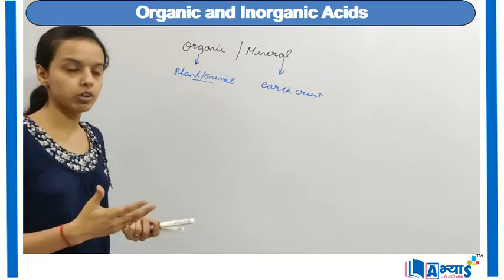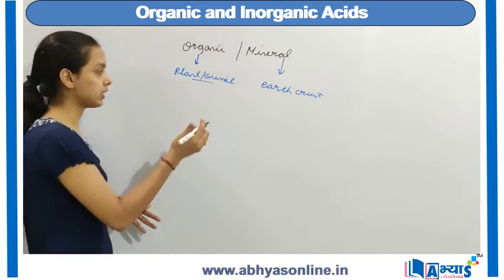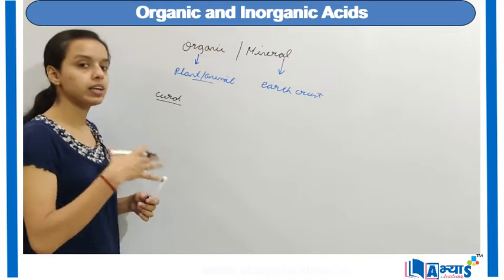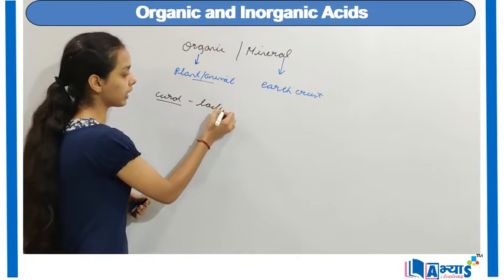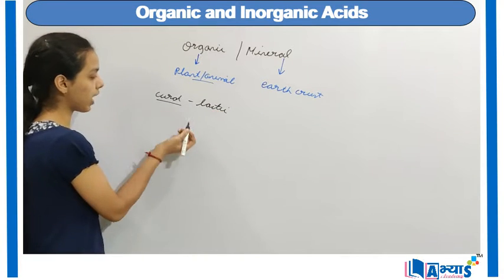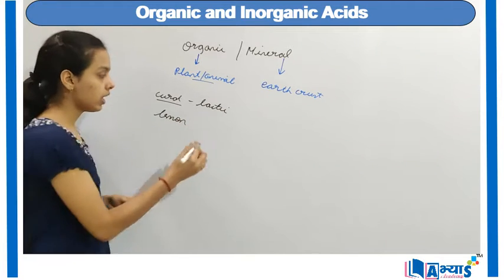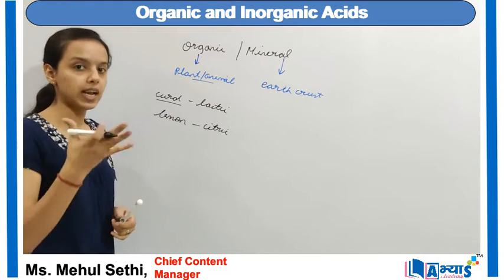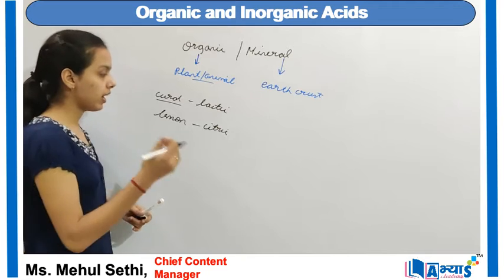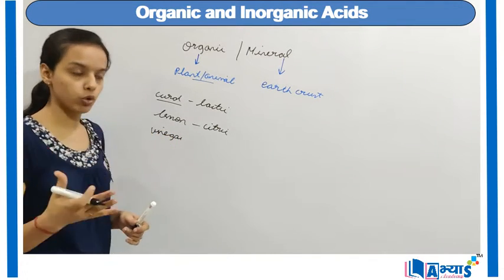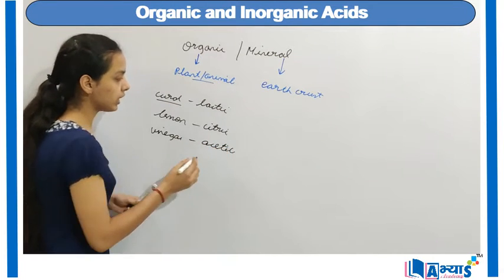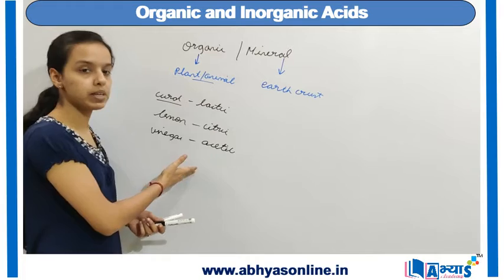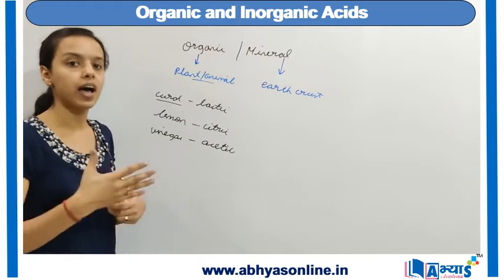The most common example of an organic acid is found in curd. Curd is sour in taste because it contains lactic acid. Other examples include citrus fruits such as lemons and oranges, which contain citric acid. Vinegar, commonly found at home, contains acetic acid. So lactic acid, citric acid, and acetic acid are all examples of organic acids obtained from plants or animals.